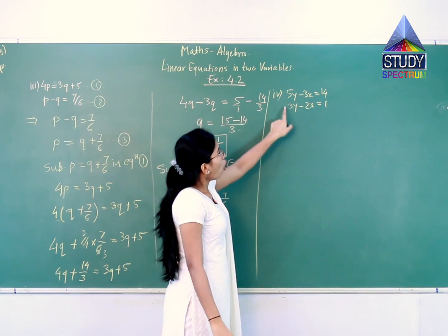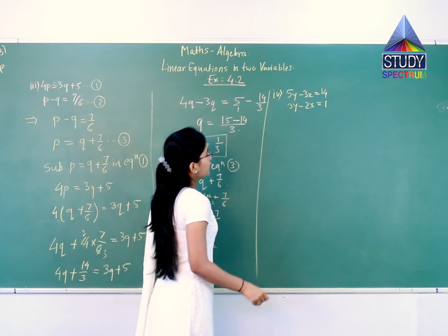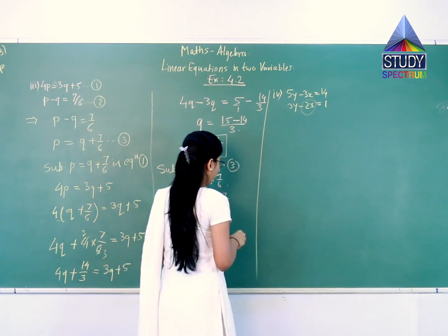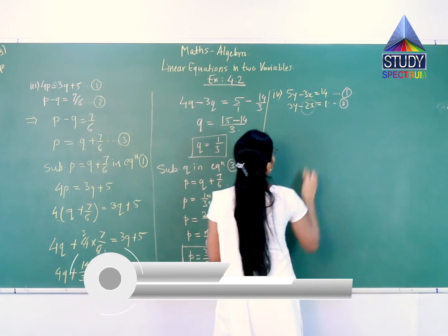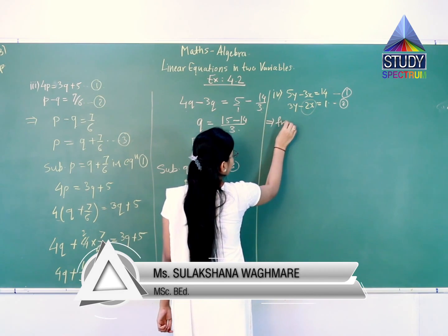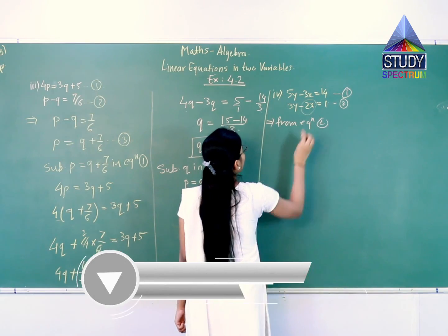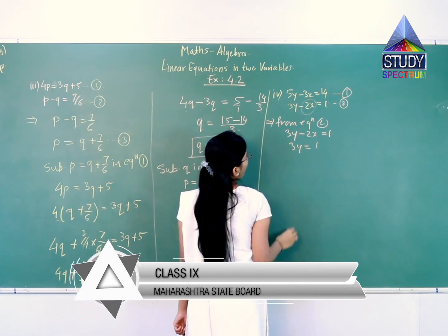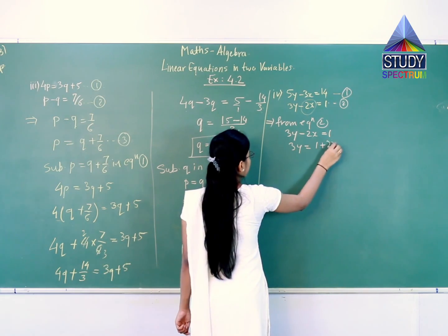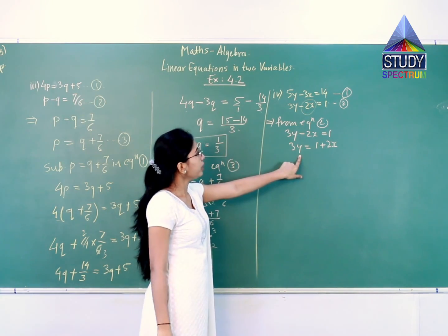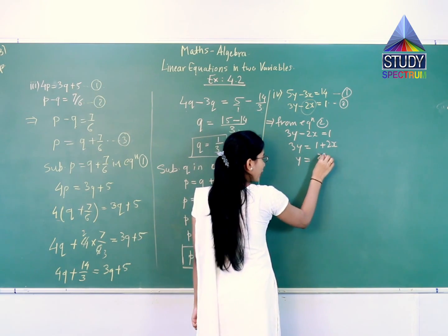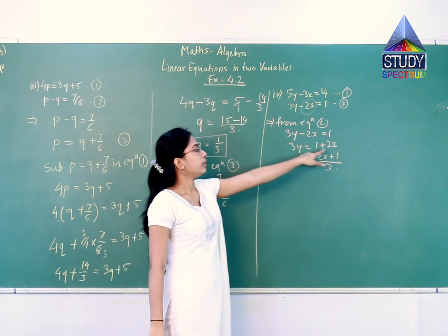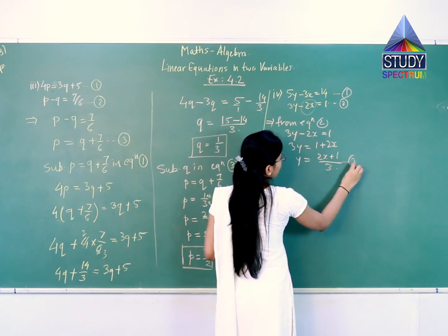You can see all the variables have coefficients, but x in the second equation has the least coefficient, that is 2. We will name the equations first. From equation 2, 3y minus 2x equals 1, I can transfer 2x to the right-hand side: 3y equals 1 plus 2x. So we can obtain y here: y is equal to 2x plus 1 upon 3. We could obtain x also, but more steps would be needed. This is equation number 3.